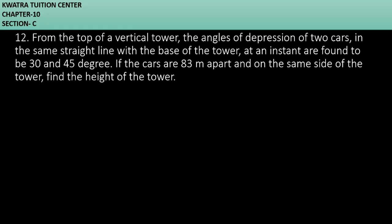So first of all, let's try to create our diagram here. You can see that we have a vertical tower and then you have angle of depression that is 30 degree and 45 degree respectively. So how do we create the angle of depression? With the help of normal side.